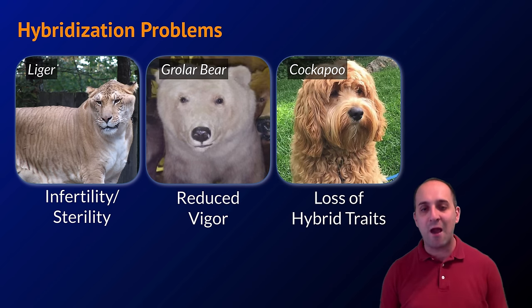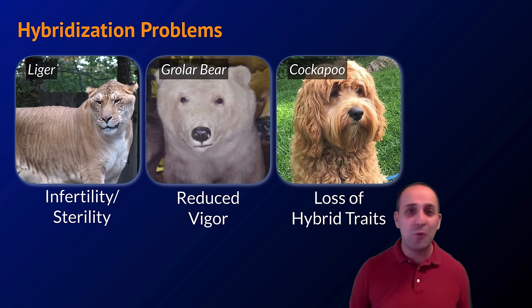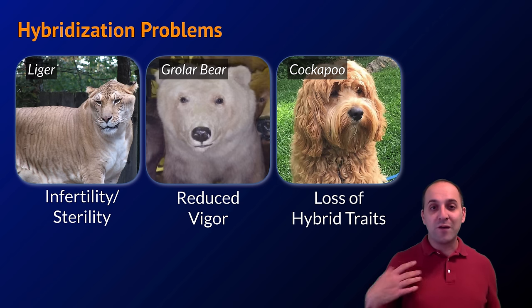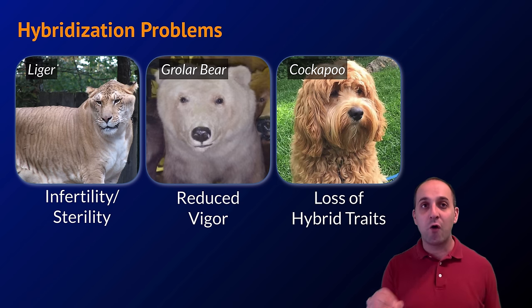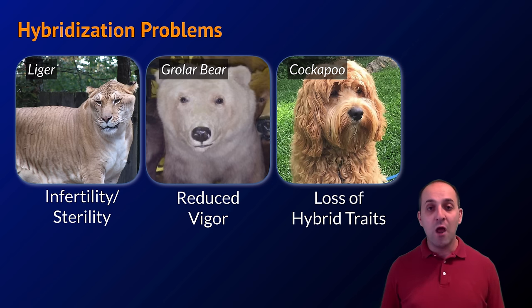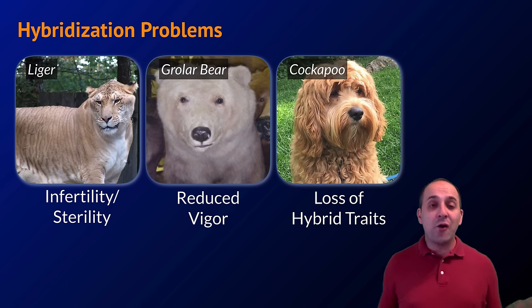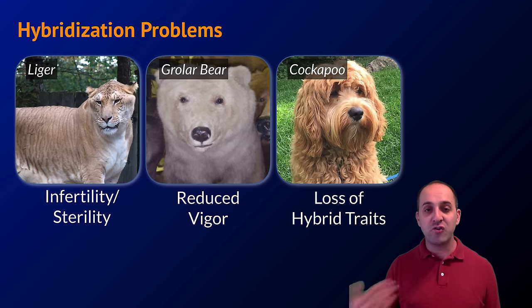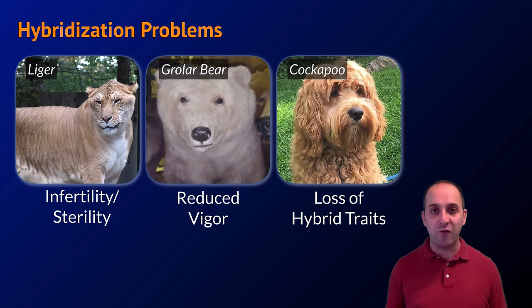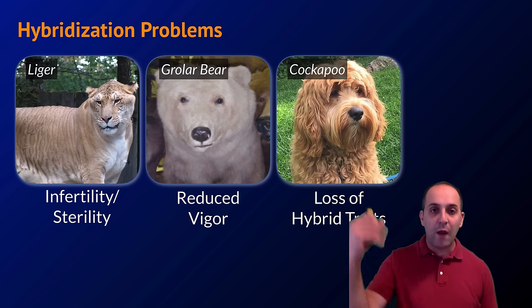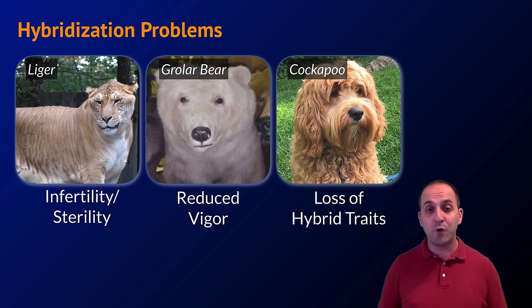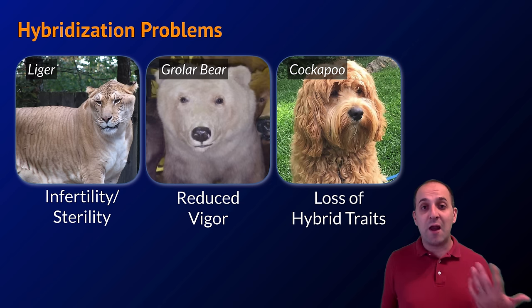We can also have what's called hybrid breakdown, or loss of hybrid traits. The cockapoo is the product of breeding a cocker spaniel and a poodle. Cockapoos must be the first generation of that cross — the minute you allow those cockapoos to breed, they start to lose their hybrid characteristics and go back towards looking like either a cocker spaniel or a poodle. I understand dogs are all one species, but this illustrates the point: after that first generation, subsequent rounds of reproduction can lose a lot of hybrid traits, and this also occurs in nature between closely related species.